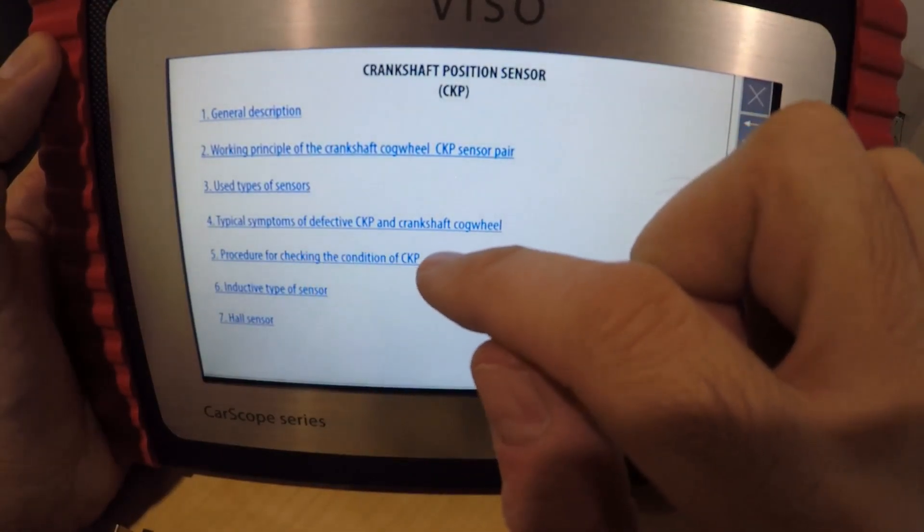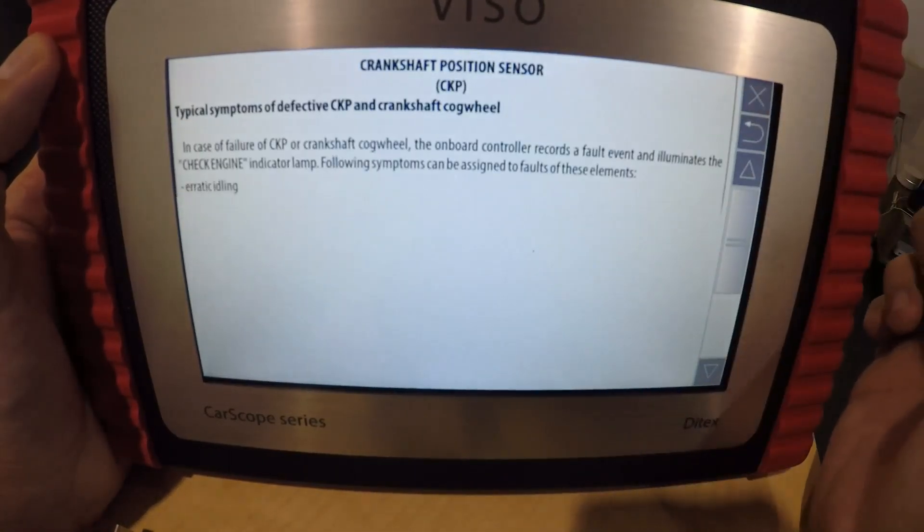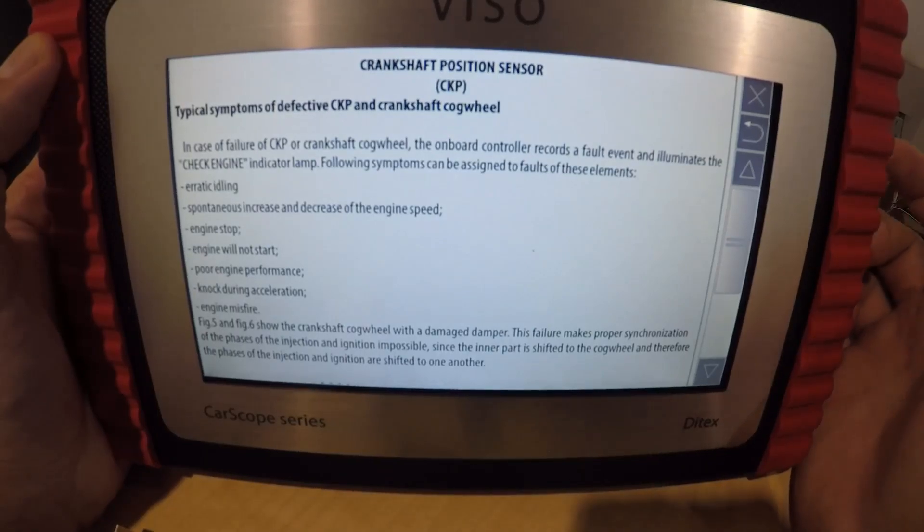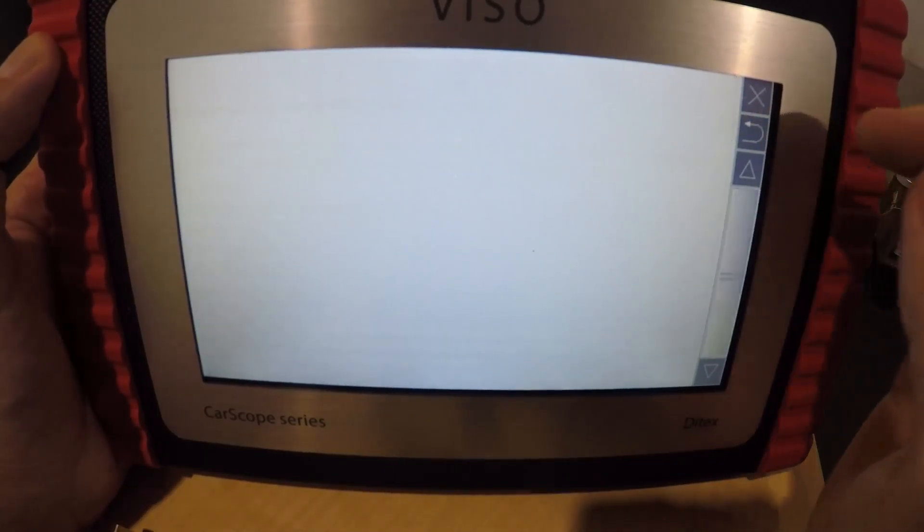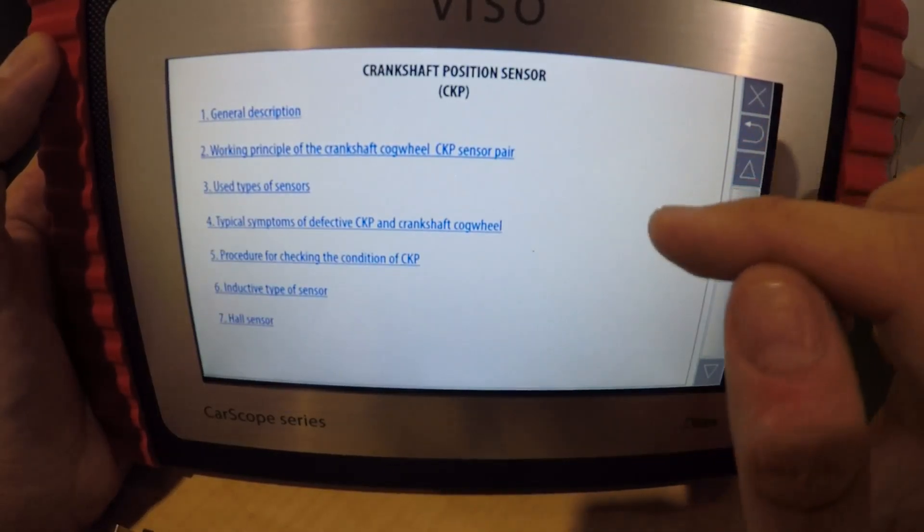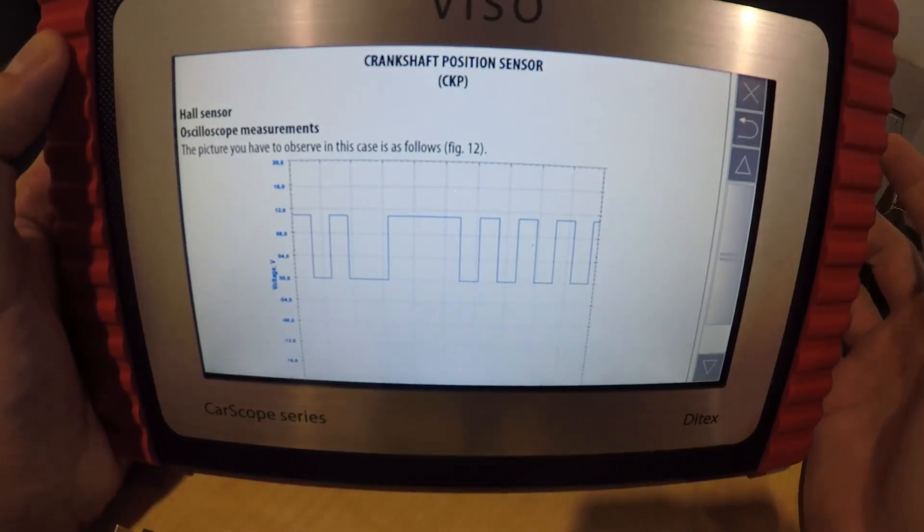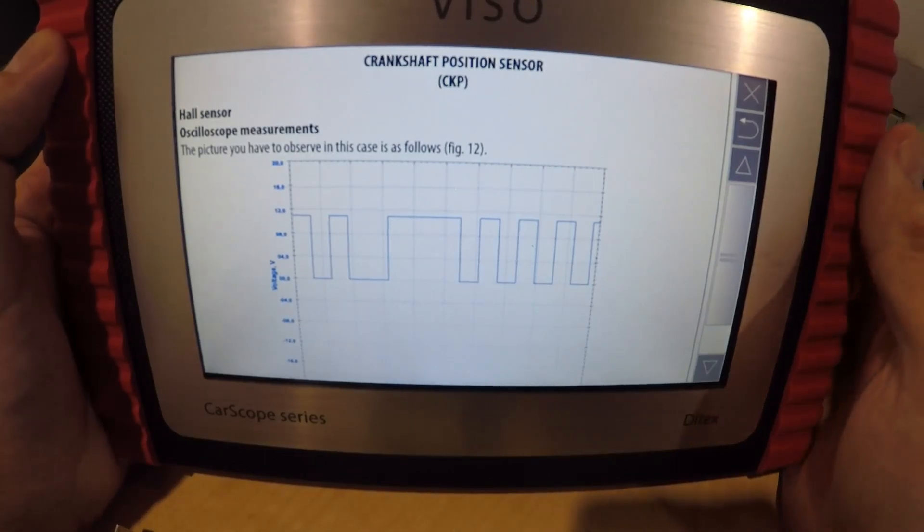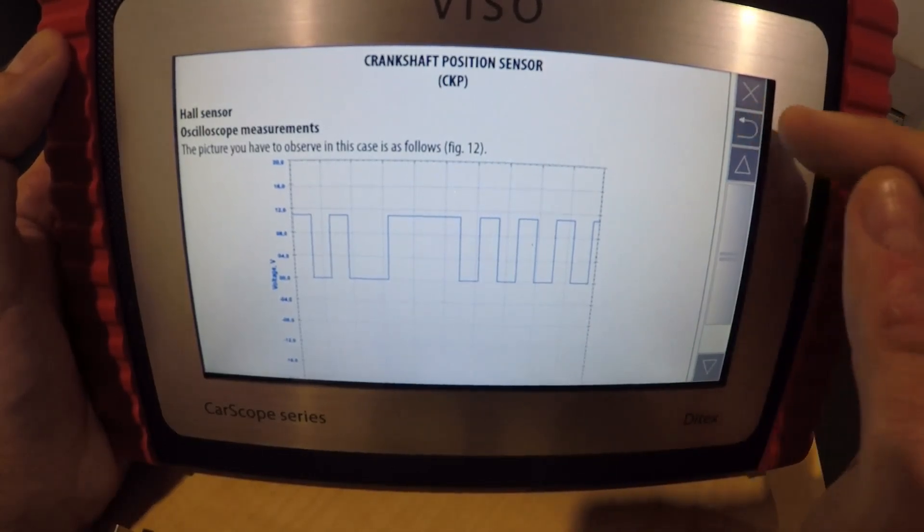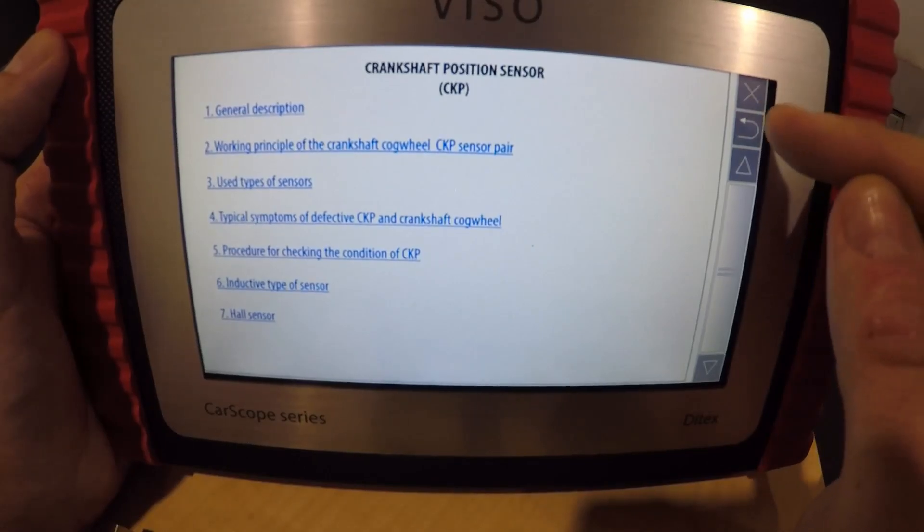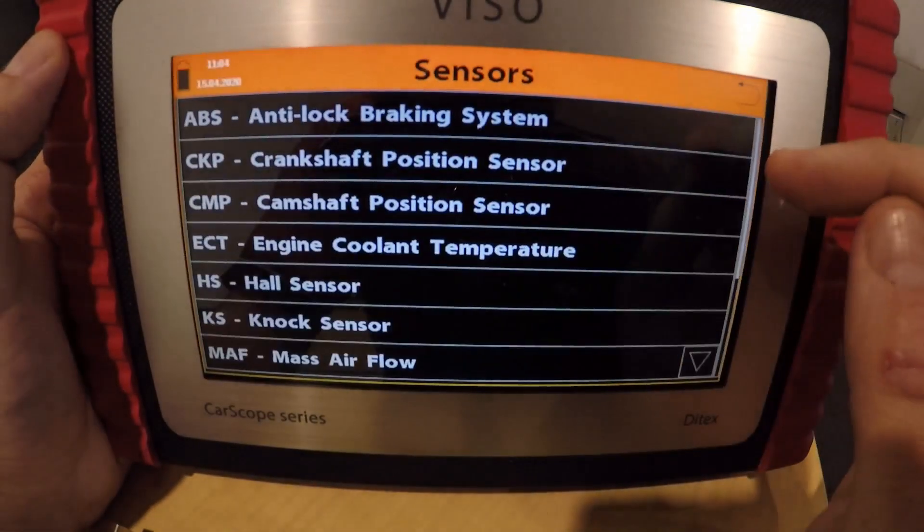Typical symptoms of a defective CKP. It's got a lot of informational help in here as well, which is really good. It's really good to have. It's even got example waveforms. So we'll get a crankshaft.